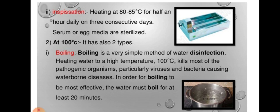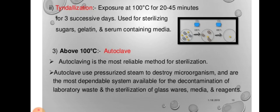At 100 degrees centigrade, there are two types. Boiling is a very simple method of water disinfection. Heating water at 100 degrees centigrade kills most pathogenic organisms, particularly viruses and bacteria causing water-borne diseases. In order for boiling to be more effective, the water must boil for at least 20 minutes. The second mechanism at 100 degrees centigrade is tyndallization. Here, it is exposed to 100 degrees centigrade for 20 to 45 minutes for three successive days. It is used for sterilizing sugars, gelatins and serum-containing media.